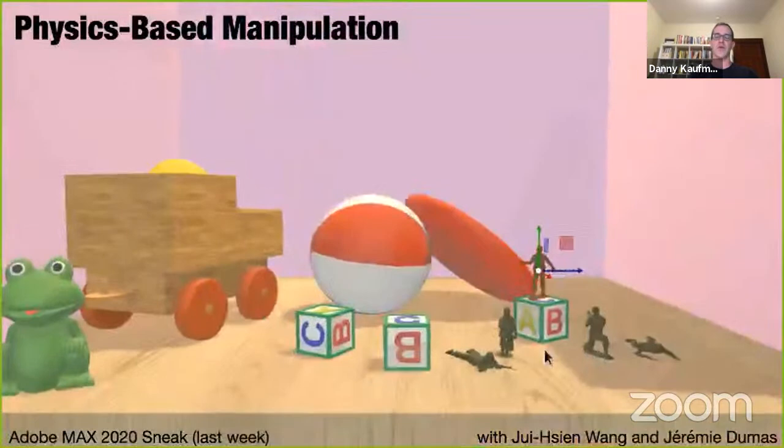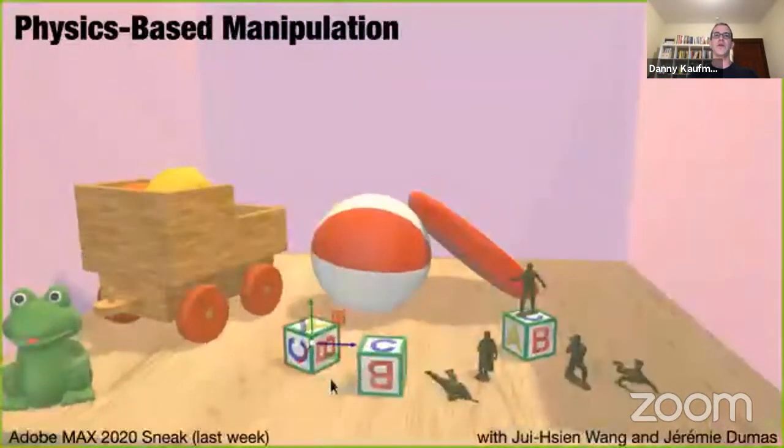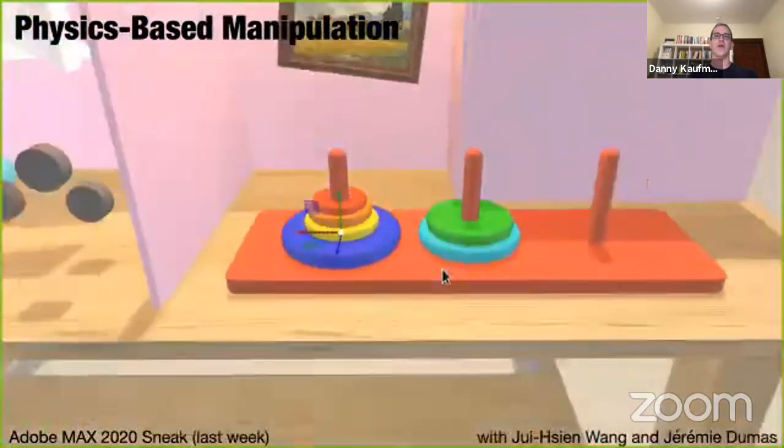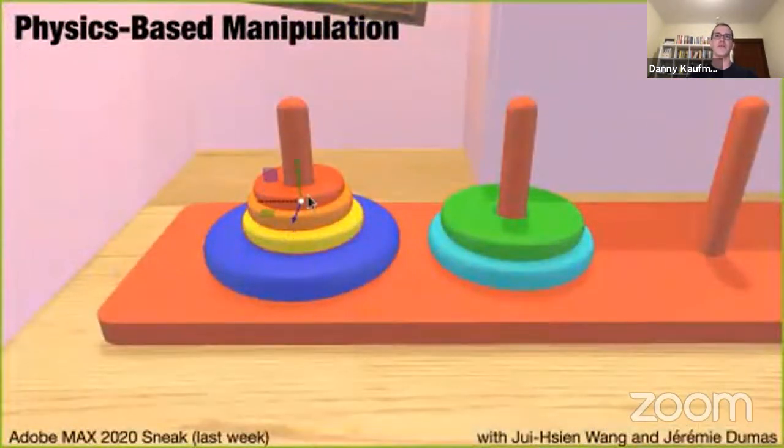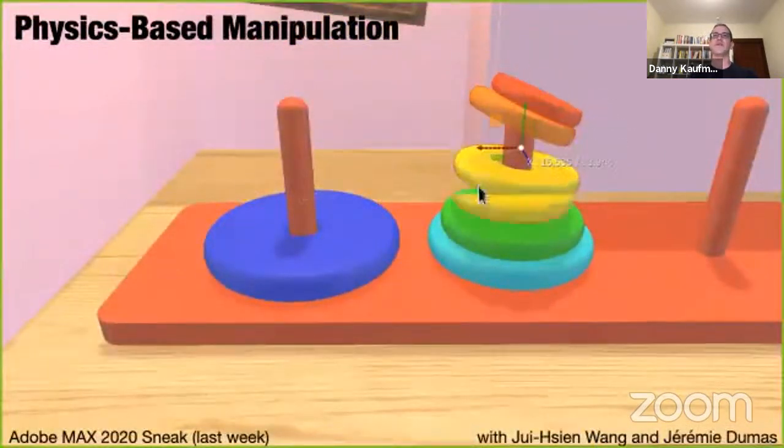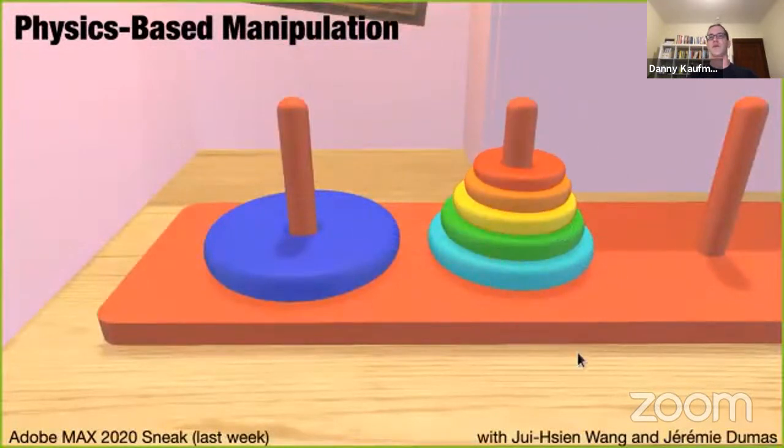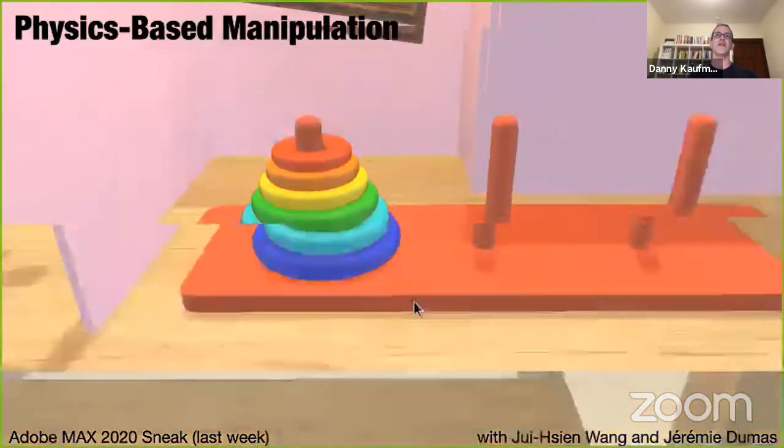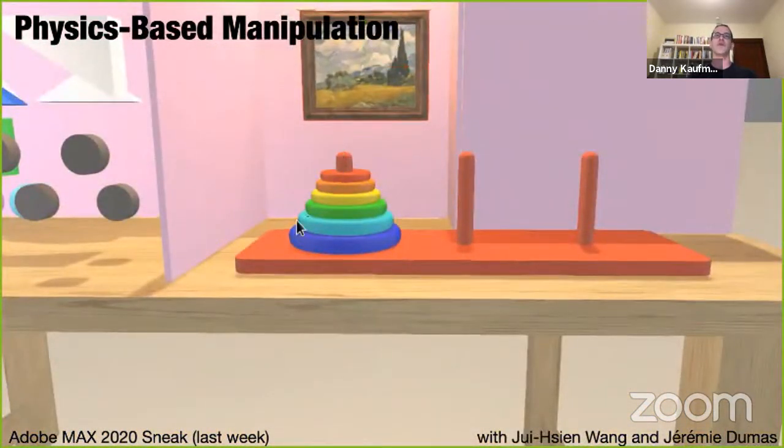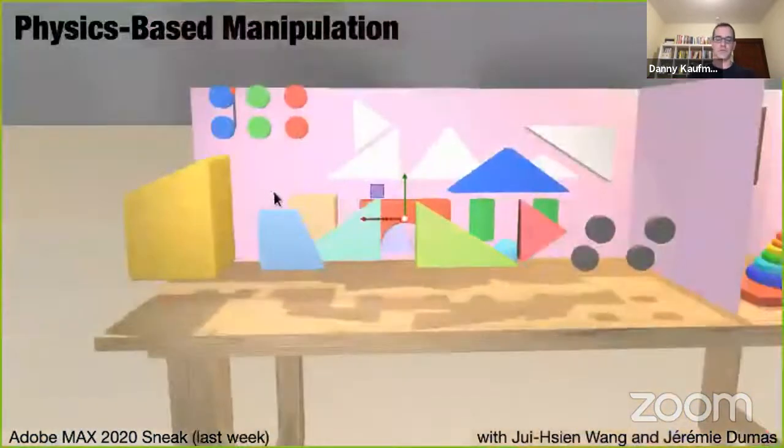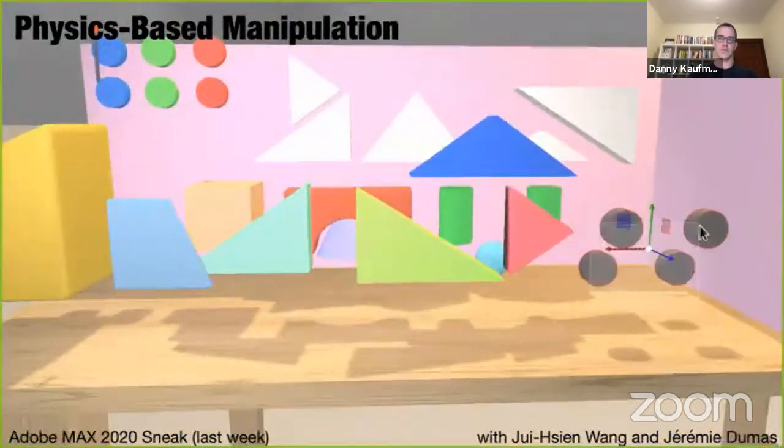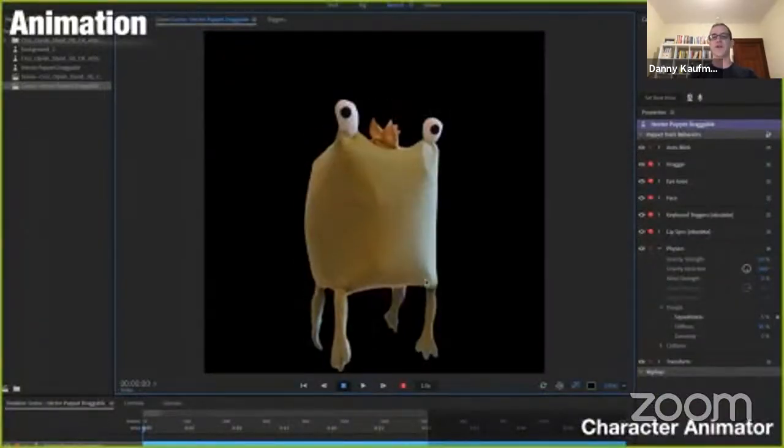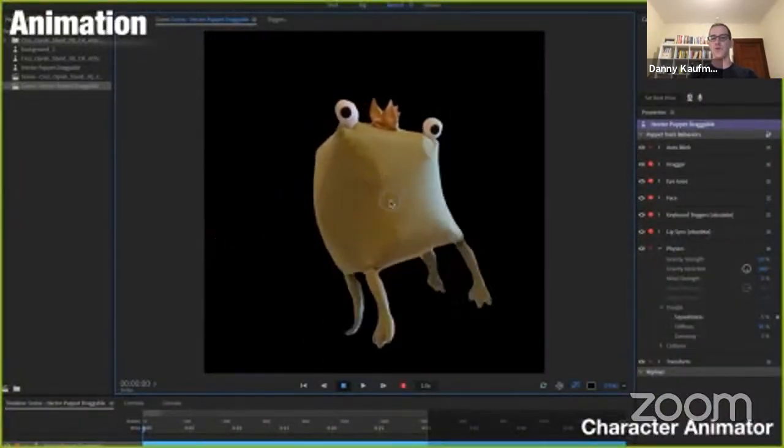And we've also been integrating physics with 3D transform tools to enable easy 3D manipulation and layout. This was a demo that we just demoed last week at Adobe Max, but here the key thing is that we want to make manipulation easy and seamless. So we let the user give us the high-level manipulations and essentially let physics here give you the low-level details. So you don't have to do the fine-tuning and adjustment to enforce non-intersection and get easy, natural layout.